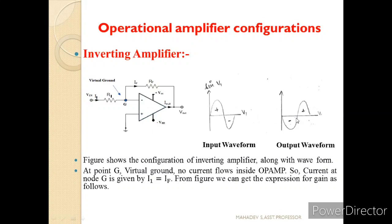Let us theoretically prove this. The point G is called the Virtual Ground Concept, because whatever potential is present at this particular point, the same potential is present across the point G. What happens is that the current entering node G is equal to the current leaving node G.